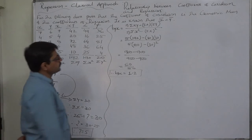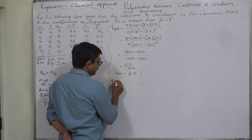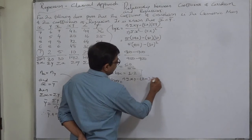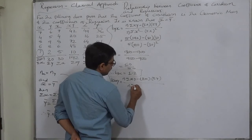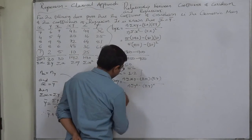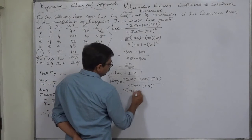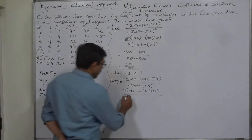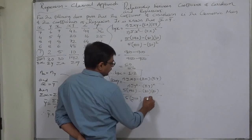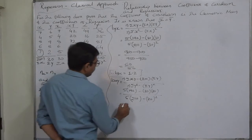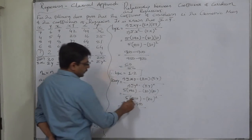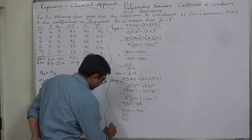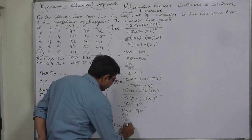Now for the coefficient of regression of x on y, making x the independent variable: bxy = (n·σxy − σx·σy) / (n·σy² − (σy)²). The numerator is the same: 960 − 900 = 60. The denominator is now: 5×210 − 30² = 1050 − 900 = 150. So bxy = 60/150 = 0.4, also positive.